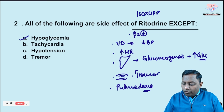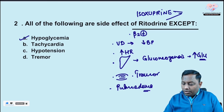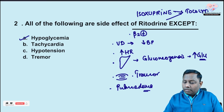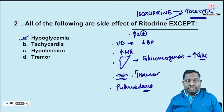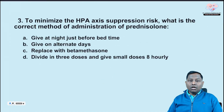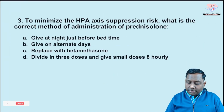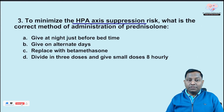There is one more beta-2 agonist tocolytic agent called isoxuprine. Both ritodrine and isoxuprine are utilized as tocolytic agents to slow down the progression of labor.